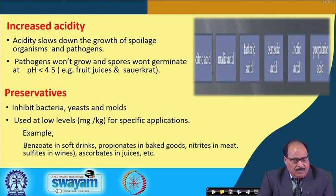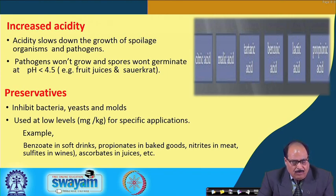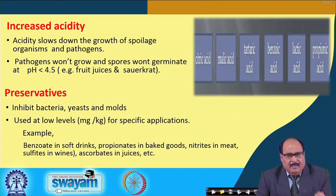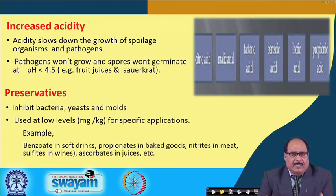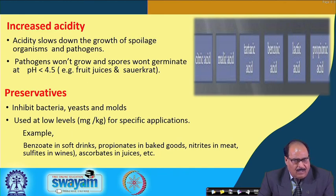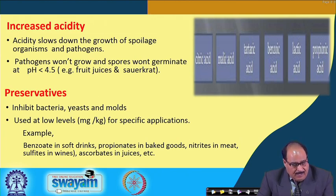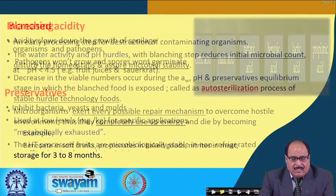Preservatives inhibit bacteria, yeast, or molds and are used at low levels for specific applications — in fact at very low levels, like a few milligrams per kilogram of food. Some commonly used preservatives are benzoates in soft drinks, propionates in baked goods, nitrates in meats, sulphites in wines, and ascorbates in juices.